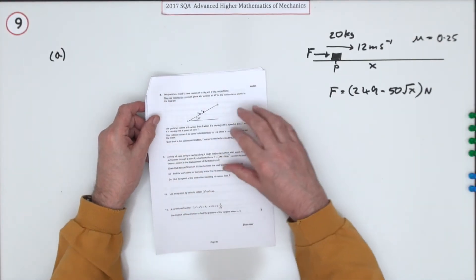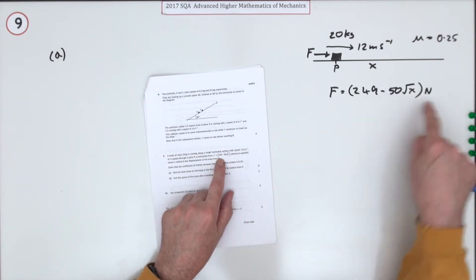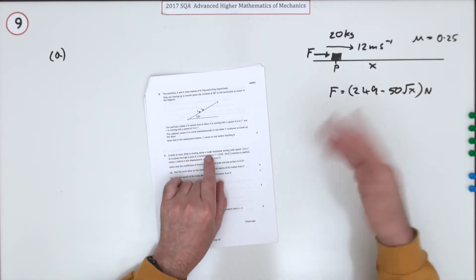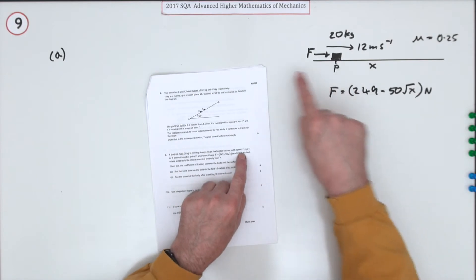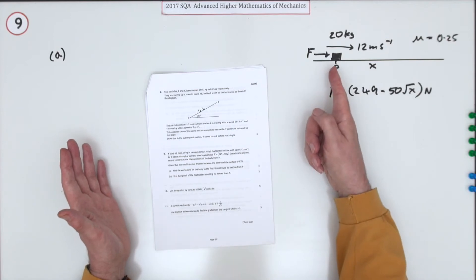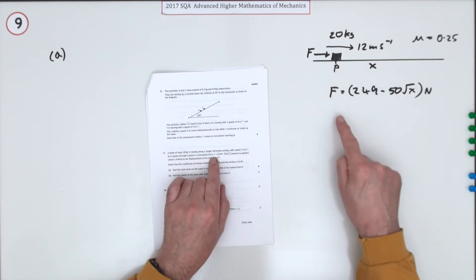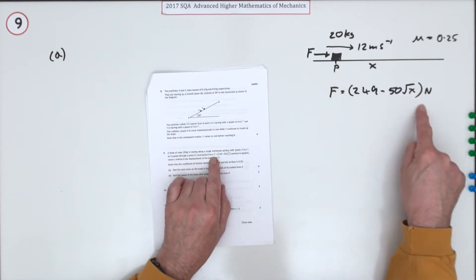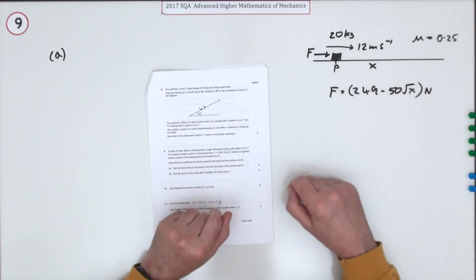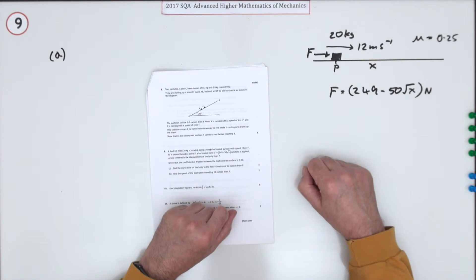Number nine from the 2017 Mathematics of Mechanics — a six-mark question about a variable force. A body of mass 20 kilograms is moving along a rough horizontal surface with a speed of 12 meters per second at point P. A force is applied where x is the distance measured from that point. The coefficient of friction is 0.25.